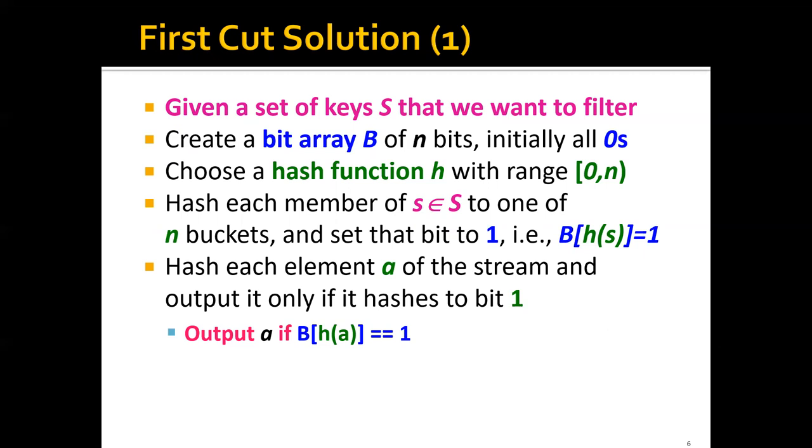Of course, one idea to do this is to use a hash function, not a hash table, but a hash function. Let's say that we're given a set of keys S, and we want to filter elements to see if the element is inside S or not. We can first create a bit array B of n bits. Initially, we will set all the bits to 0, and we'll choose a hash function h with the range of 0 to n.